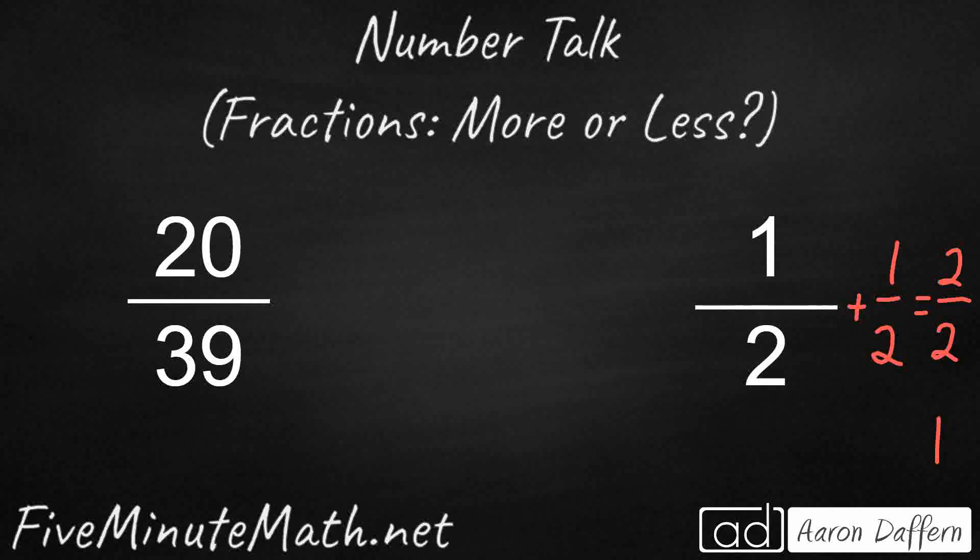So my question is, what happens if we double 20 39ths? That means I'm simply going to either multiply it by 2. In this case, I'm just going to add it to itself. But remember, when we're adding fractions, we first need to make sure that the denominator is the same because that gives us the same unit. Then we simply keep the denominator the same. We're not adding 39 to 39. That's simply the unit that we're using. I've got 20 39ths and another 20 39ths. So 20 and 20 is going to make 40 39ths.